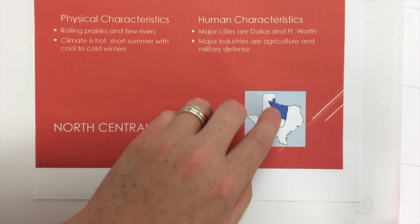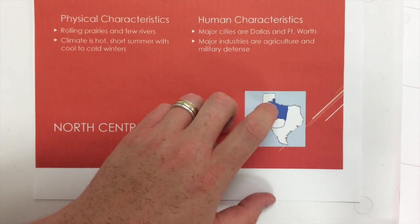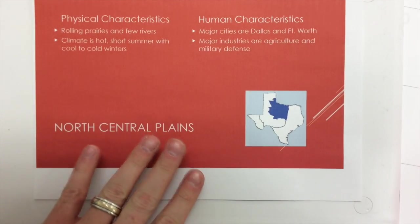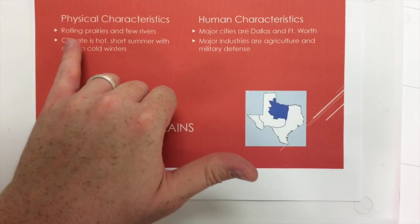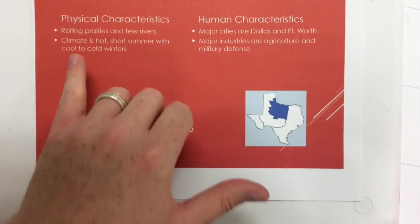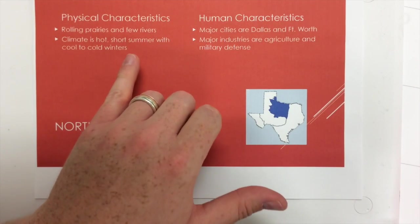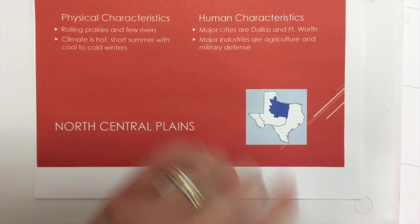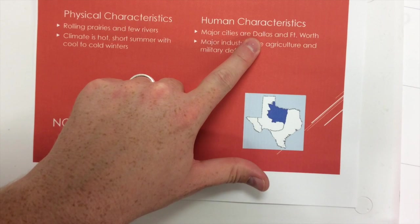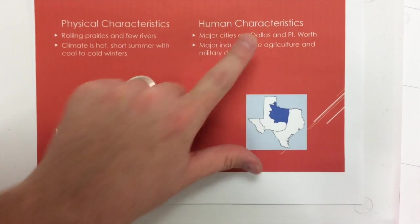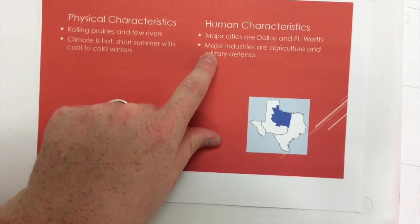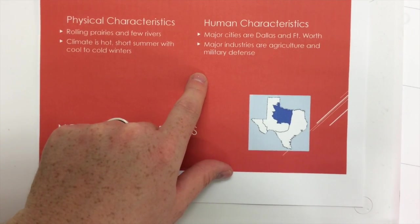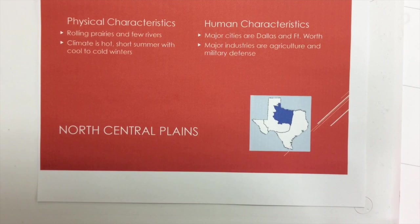Our final region is the north central plains. We're going to have rolling prairies and a few rivers. The climate is warm and hot in summer — a little shorter summer — but with cool and cold winters. Human characteristics: Dallas and Fort Worth are the major areas. Major industries include agriculture and military defense, especially in Fort Worth where a lot of weapons are produced for the military. Make sure we get everything copied down by our cutout of each region.